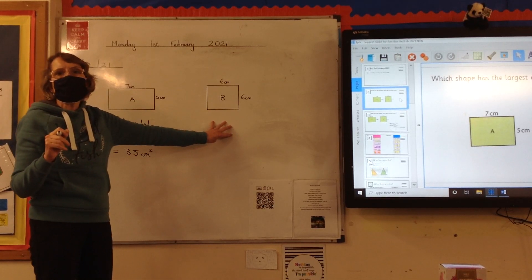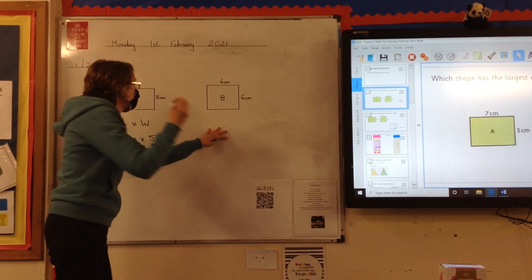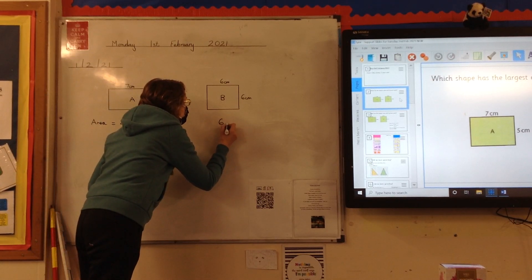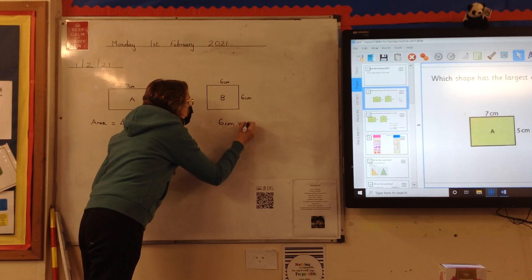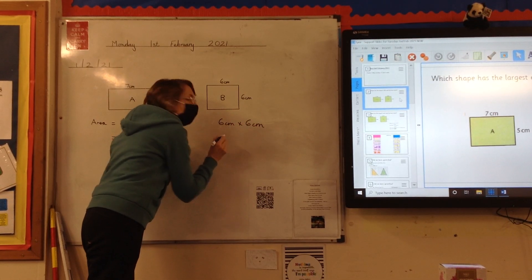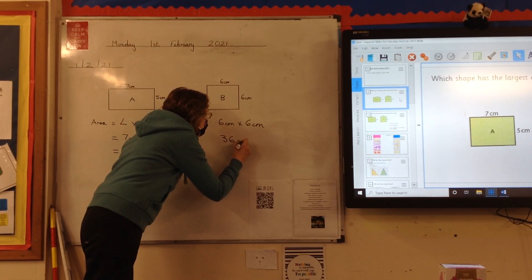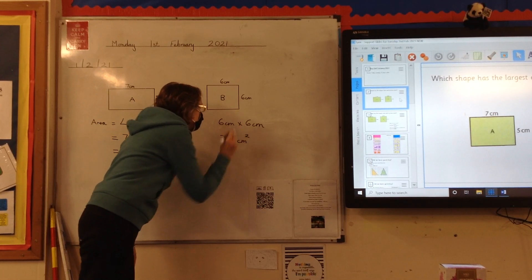How would we calculate the area of this square? You would do 6 centimetres times 6 centimetres, which is... everybody? 36 centimetres squared.